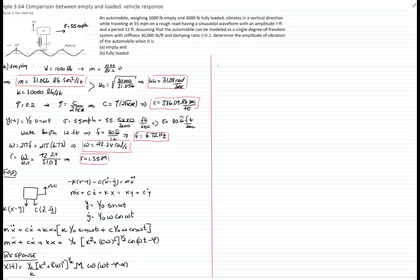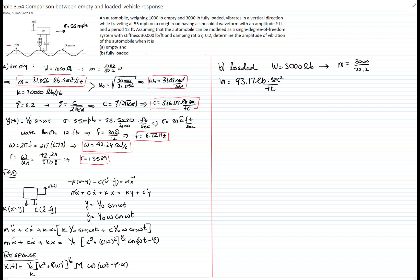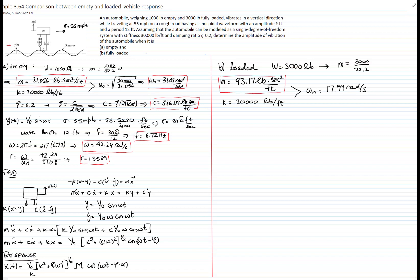Now let's analyze the loaded car — part B. The load is now 3,000 pounds instead of 1,000 pounds. Dividing by gravity (32.2 ft/s²) gives a mass of 93.17 pounds·seconds² per foot. We keep the same spring constant of 30,000 pounds per foot. The natural frequency is the square root of k/m, which gives 17.94 radians per second.